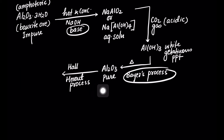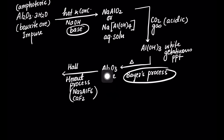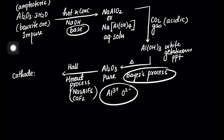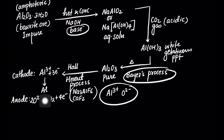In the Hall-Héroult process, we do the electrolysis of alumina by mixing cryolite, that is Na3AlF6, and fluorspar, that is CaF2. This decreases the melting point of alumina and increases the conductivity. Alumina basically provides Al3+ and oxide ions. At the cathode, we get reduction of Al3+ to form aluminium metal, and at the anode, the oxide ions get oxidized to O2, giving 4 electrons. So the products of the Hall-Héroult process are molten aluminium and oxygen gas.